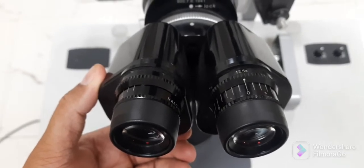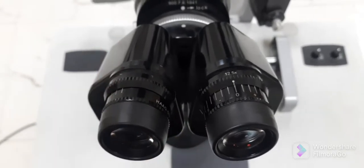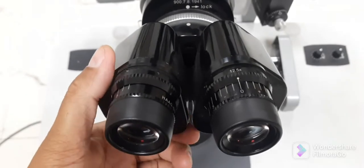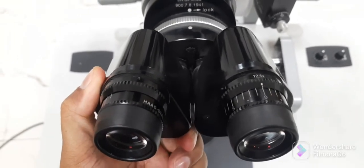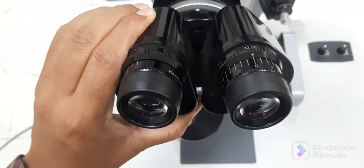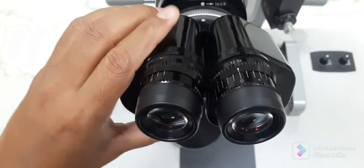Now the next most important step is to adjust the interpupillary distance by rotating these knobs which houses both the eyepiece lens - inward for short pupillary distance and outward for wide IPD or interpupillary distance.